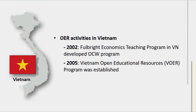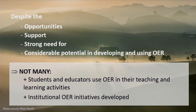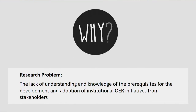Vietnam has real potential in developing and using OER — 235 universities and institutes in 2017, over 1.76 million students. However, the quality of education is not high. Research concludes we lack information resources and face financial issues: no money to license and subscribe to commercial resources. Sharing learning materials is considered an effective solution, and among information-resource-sharing options, OER is one of the most frequently suggested. Despite need and support, not many students or educators use OER and no institutional OER initiative has developed in Vietnam. Why?